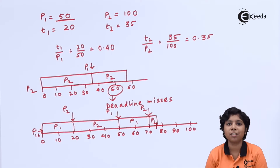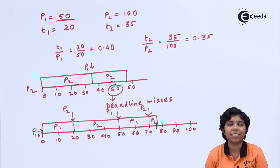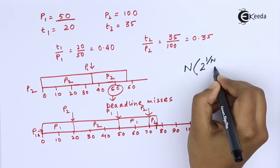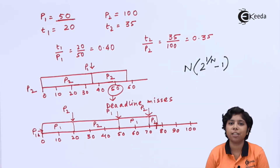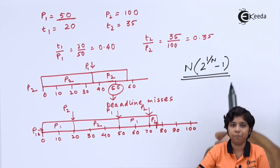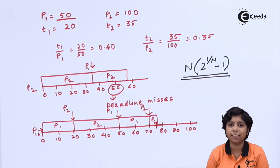However, there are limitations of rate monotonic scheduling. CPU utilization is bounded, and no algorithm can fully maximize CPU resources. With N processes, the worst-case scenario of maximum CPU utilization is bounded — the algorithm cannot always utilize the CPU to its fullest.